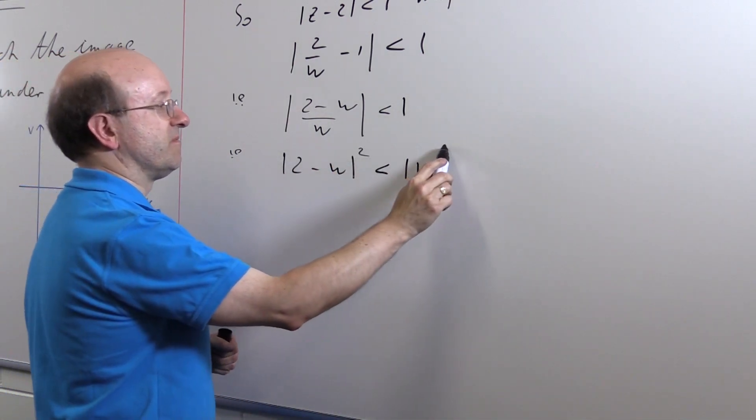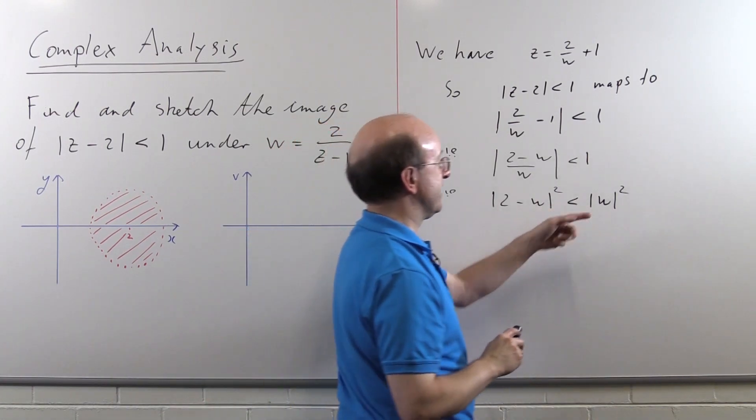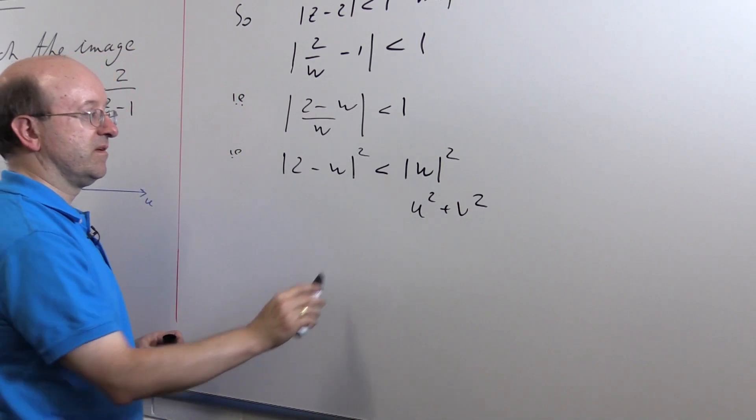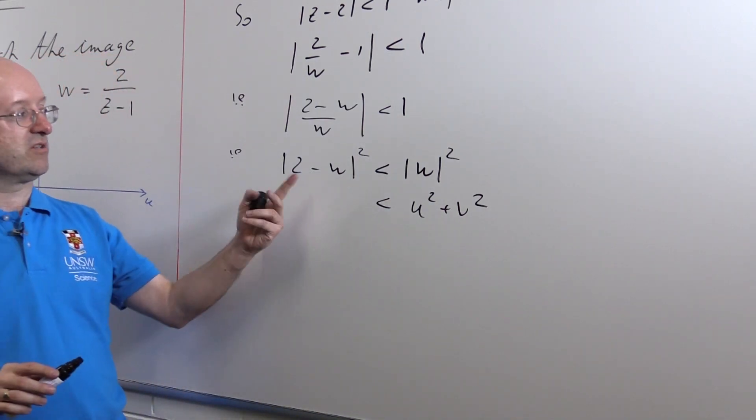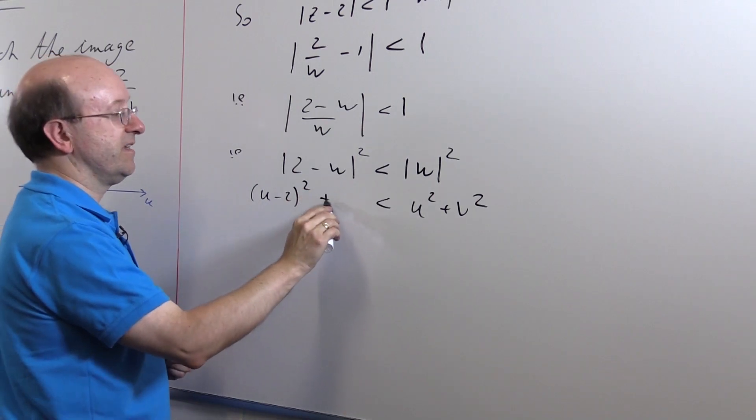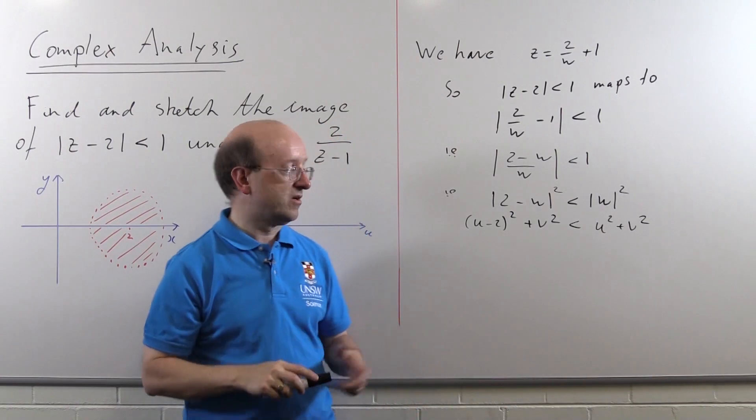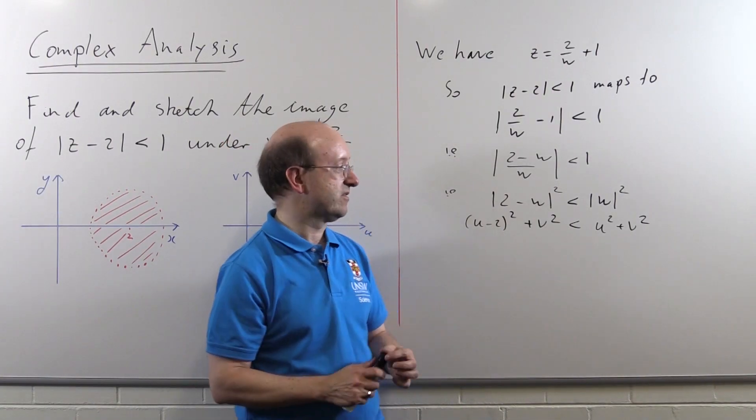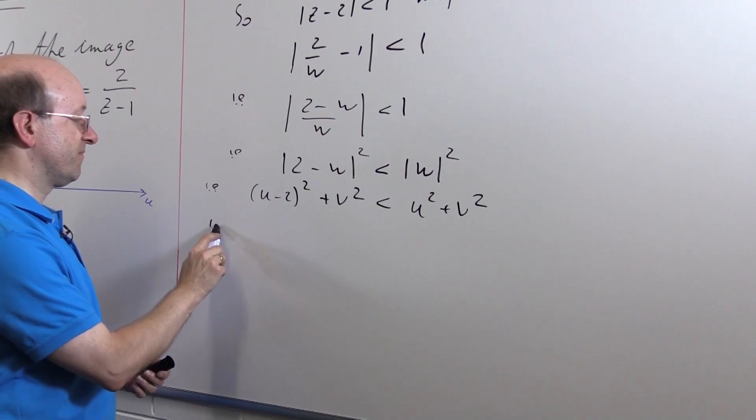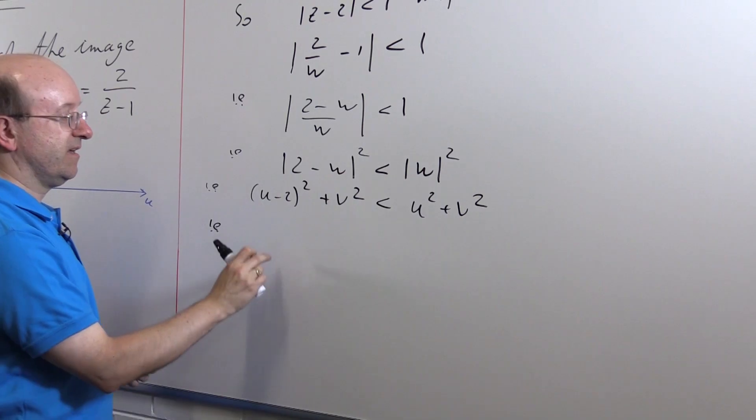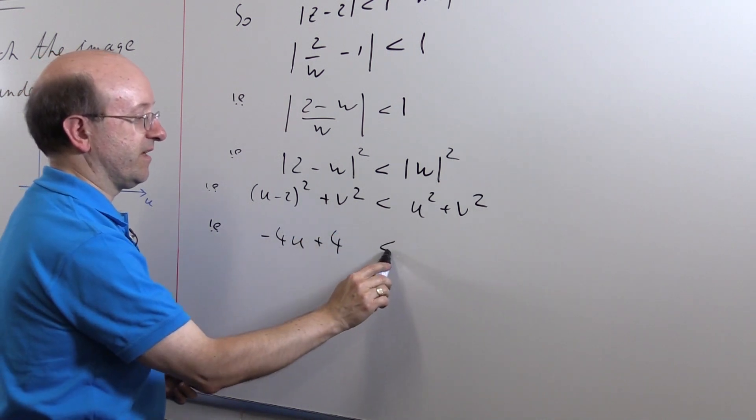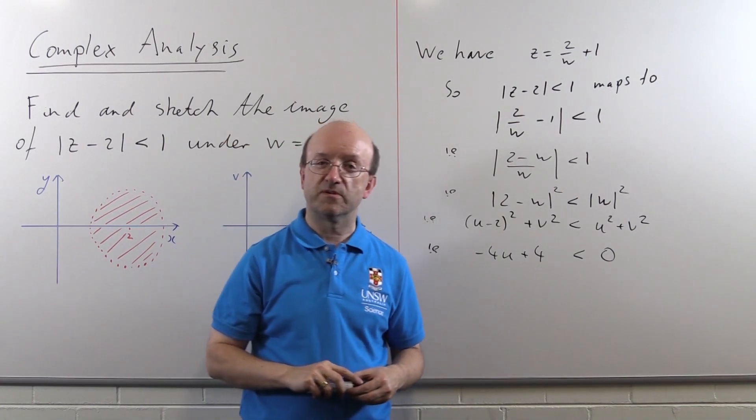So squaring both sides and then putting in for w as u plus iv. Well, |w|^2, of course, is just u^2 + v^2. |2 - w|^2. Well, the real part of 2 - w is 2 - u. We're going to square it, so it might as well be (u - 2)^2. The imaginary part is still v, so plus v^2. So we've got (u - 2)^2 + v^2 < u^2 + v^2. Square this out and then cancel off everything that can be cancelled. This is going to be u^2, which cancels the u^2 over here. Minus 4u plus 4. The v^2 cancels with the v^2 on the other side. So that's -4u + 4 < 0.